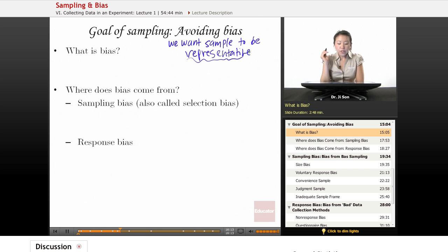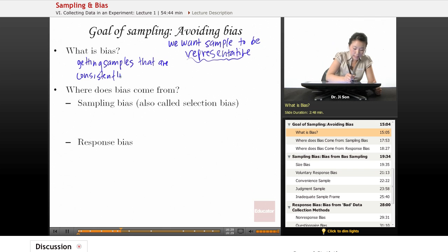So bias is getting samples that are consistently too low or high for population.